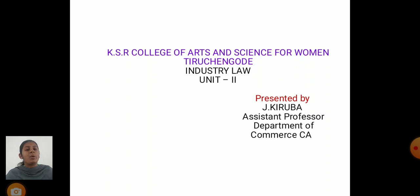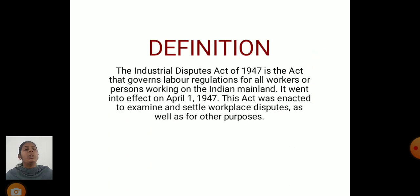Today, let us discuss about Industrial Law Unit 2. Definition: The Industrial Disputes Act of 1947 is the act that governs the labour regulations for all the workers or a person working on the Indian mainland. It came into effect on April 1, 1947. This act was enacted to examine and settle the workplace disputes as well as for other purposes.